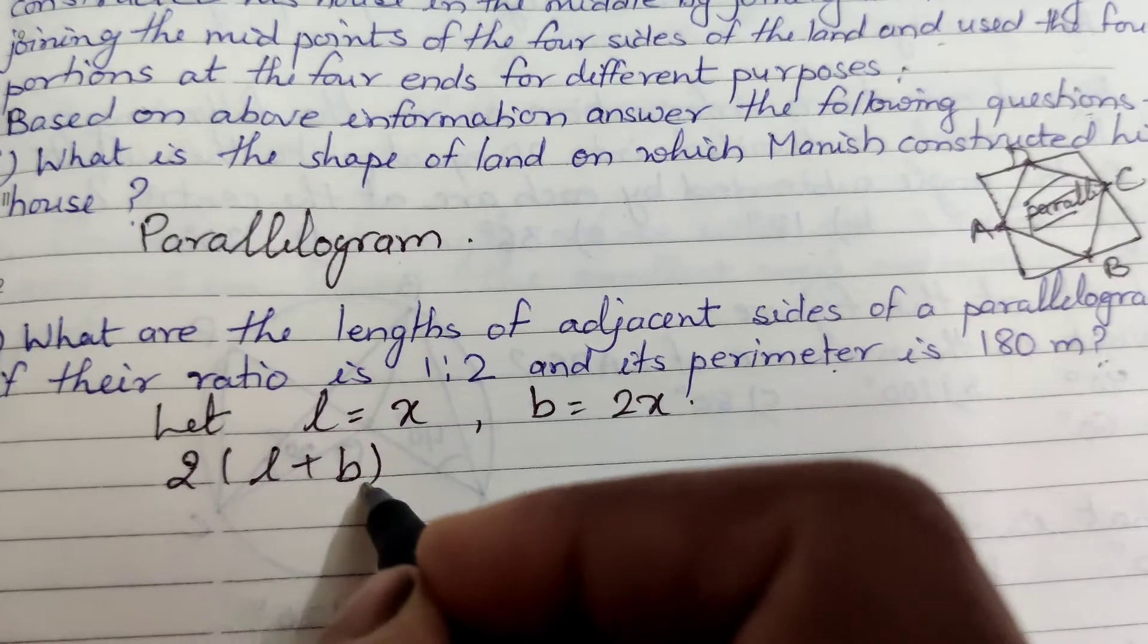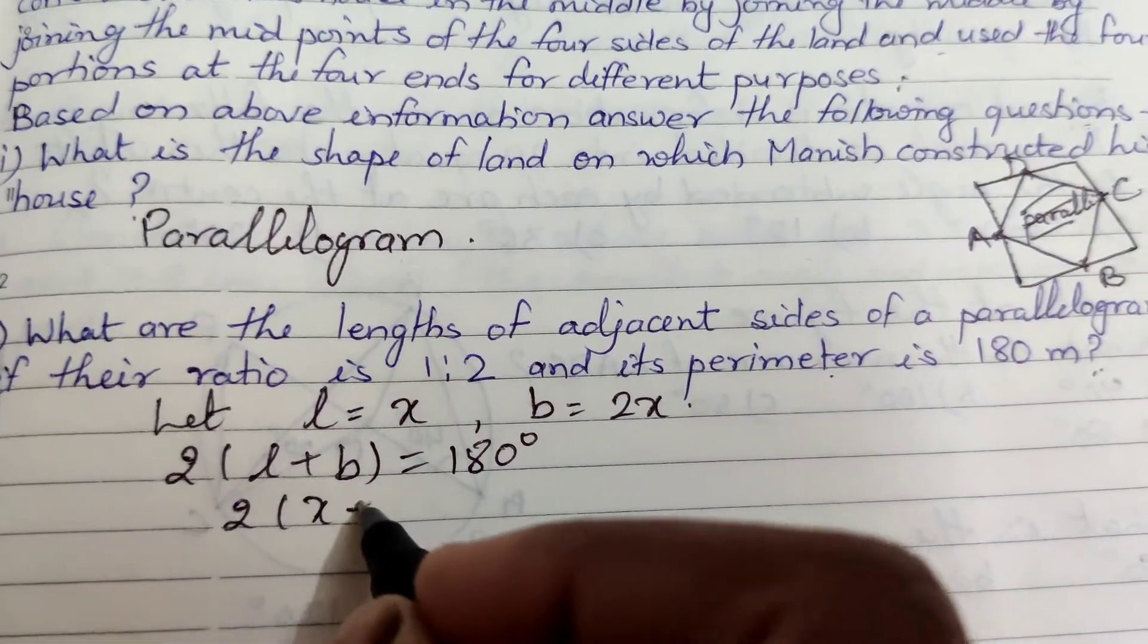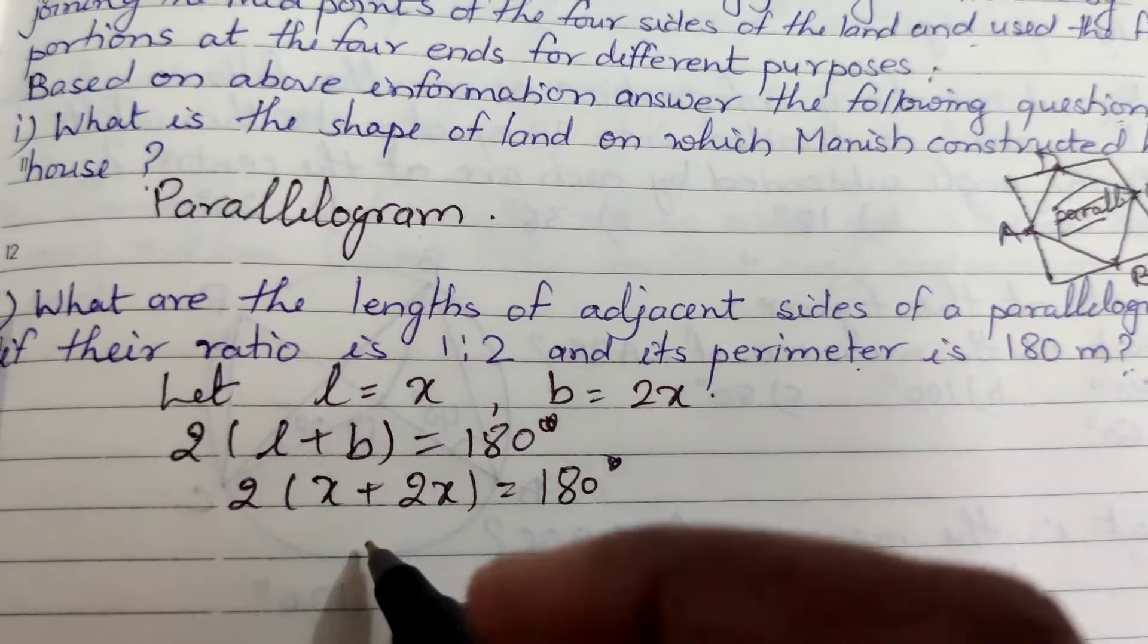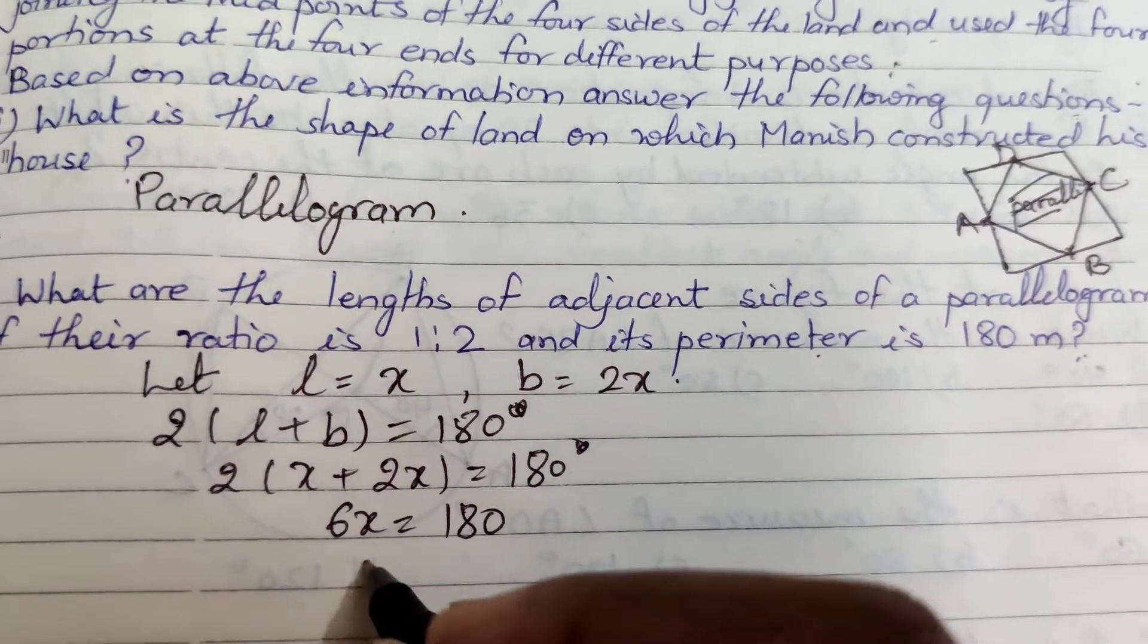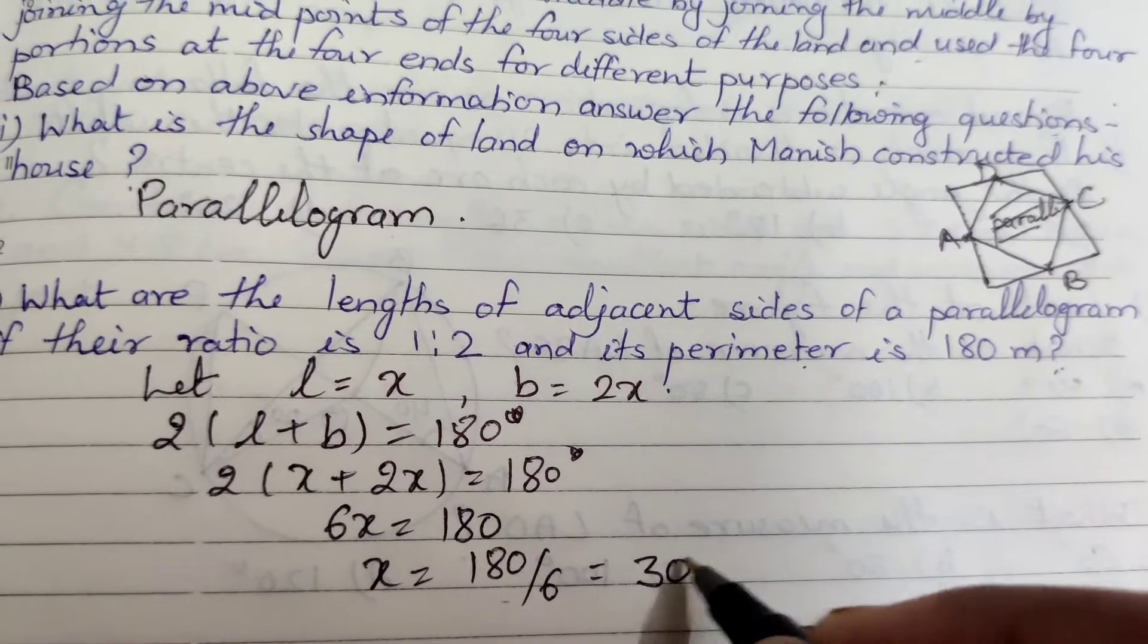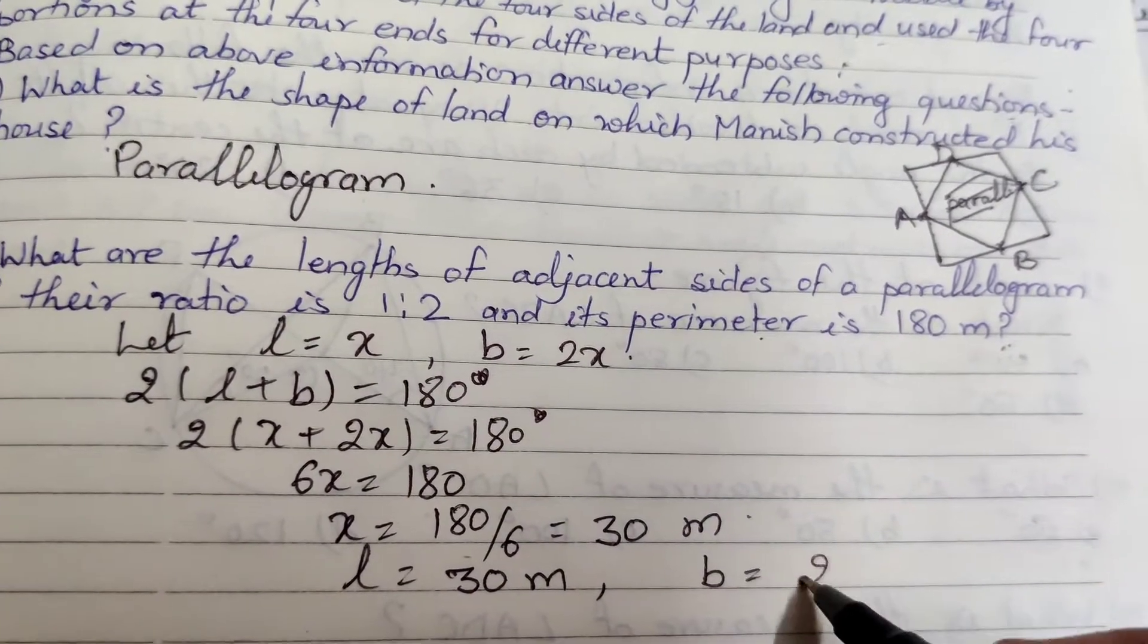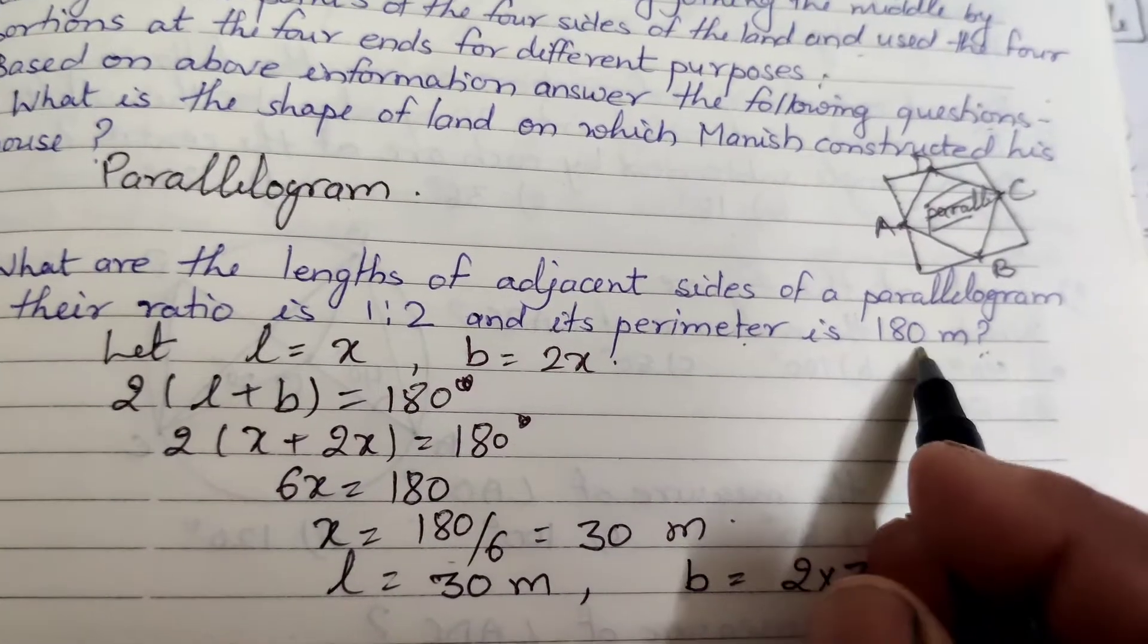The perimeter formula is the same as for a rectangle. So 2(x + 2x) = 180, which means 2(3x) = 180, so 6x = 180. Therefore x = 180/6 = 30 meters. The length is 30 meters and the breadth will be 60 meters, which is 2x = 2 × 30 = 60 meters. The perimeter is 180.